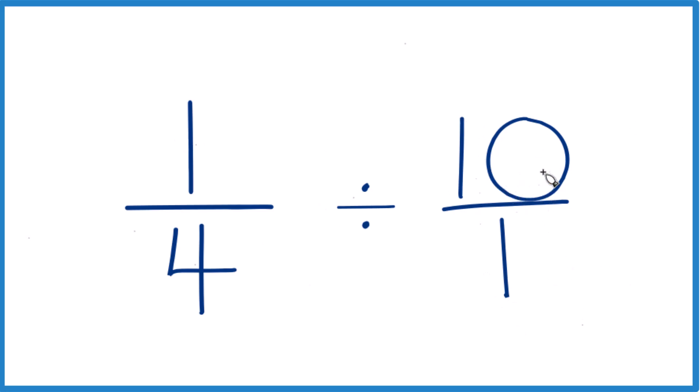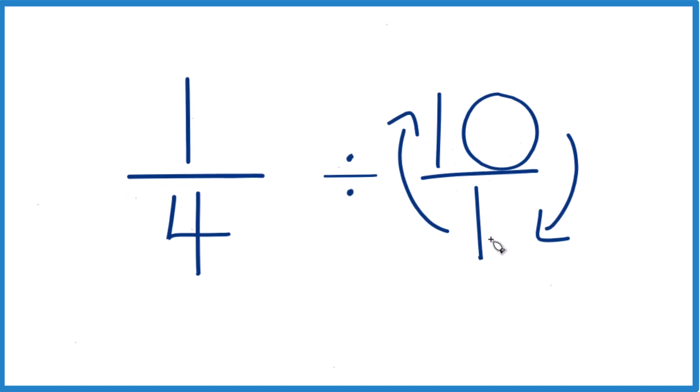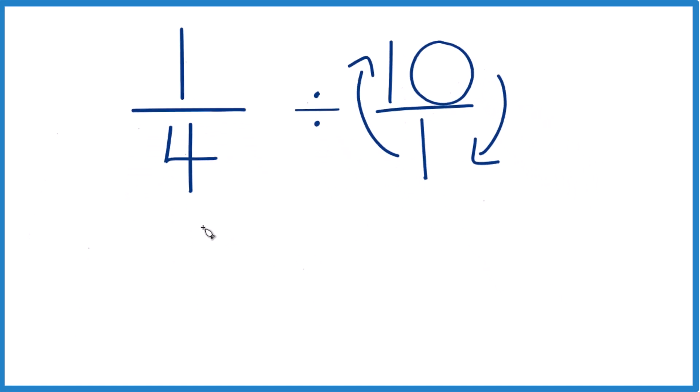let's take the reciprocal of 10 over 1 or 10. We can take 10, move that down, and 1, move that up. That's the reciprocal. And what that lets us do is take 1 fourth. Instead of division, we're going to multiply by the reciprocal of 10 over 1.